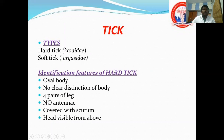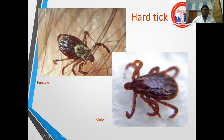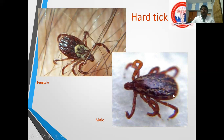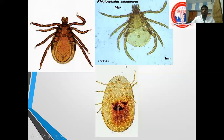Hard tick identification: oval body, no clear distinction of body features, four pairs of legs, no antenna, and covered with a scutum. The head is visible from above. The scutum is a keratinized structure. In male hard tick, it covers the entire body surface. In female hard tick, the scutum covers only one-third of the body — that is how we differentiate male and female hard tick.